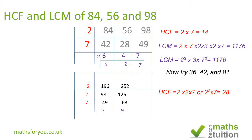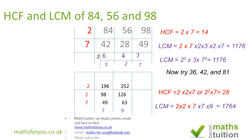Our LCM then becomes the 2 times 2 times 7 from the left column, times the 7 times 9 — that L-shaped region. If you're not asked to express this as a product of prime factors, your answer should be 2 squared times 7 squared times 3 squared, because 9 is 3 squared.